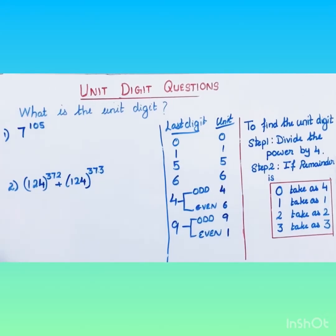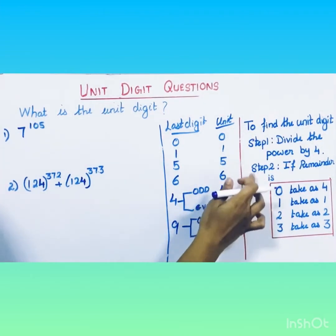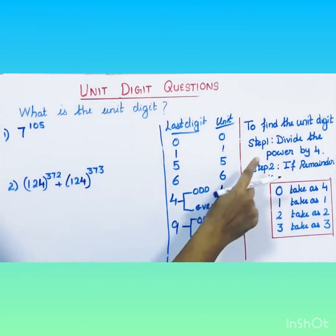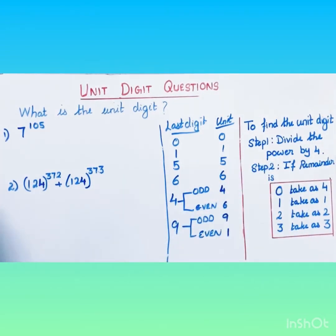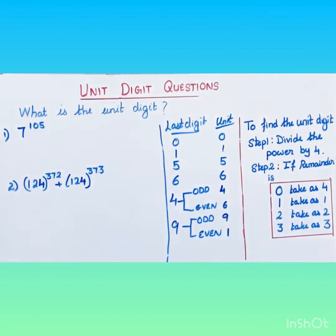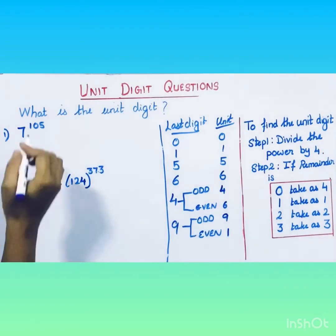Let's solve unit digit questions. Here are the steps you can follow for all questions to get the answer. First, take the power and divide it by four. If the remainder is zero, take it as four; if it is one, take it as one; if it is two, take it as two; if it is three, take it as three.